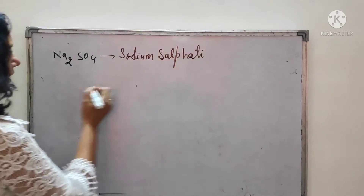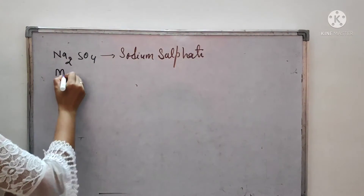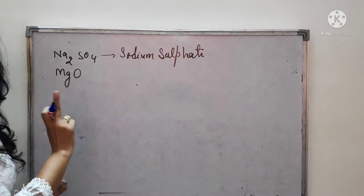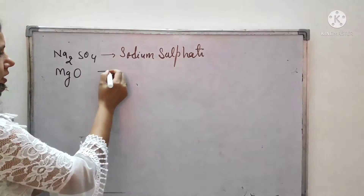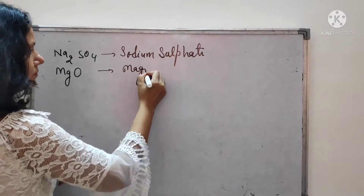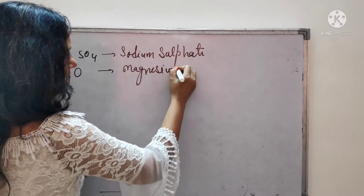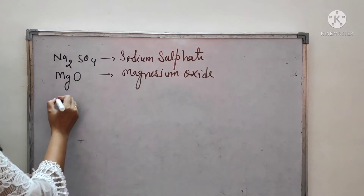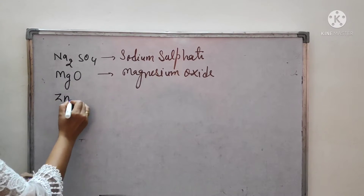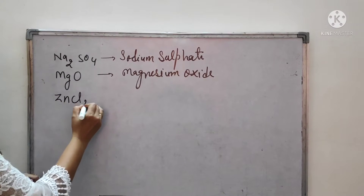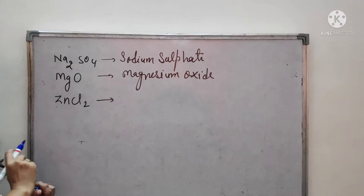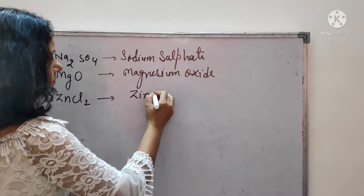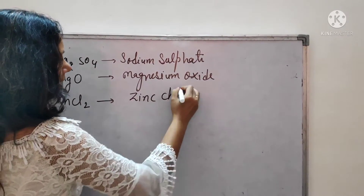Next: MgO — Mg is magnesium, O is oxide, so the name is magnesium oxide. Next: ZnCl2 — this is zinc chloride. If you remember the table, it will be very easy for you.